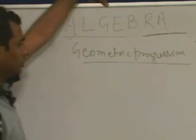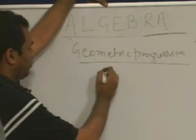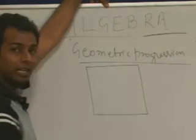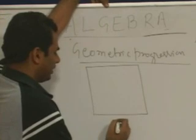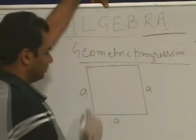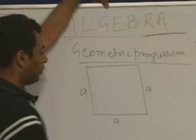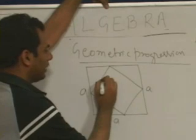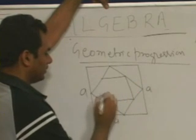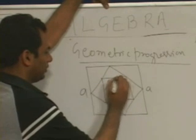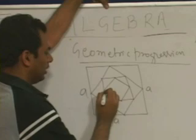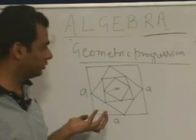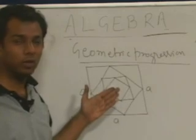For example, consider a square with side length a. By joining the midpoints of this square, we get another square. Again by joining the midpoints of that square, we get another square, and so on. This process is repeated till infinity. The question is: what is the sum of areas of all such squares?